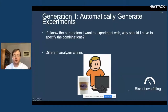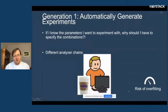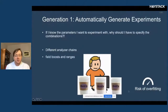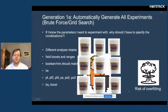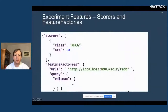There is a large parameter space: different analyzer chains, field boosts and field ranges, boolean minimum match type, pf, pf2, pf3, ps, phrasal slop — by the time you add all of those in and generate all experiments with all combinations, you are definitely at risk of overfitting. It's useful to do sometimes but you have to be really careful to avoid it, which led me to some other things.